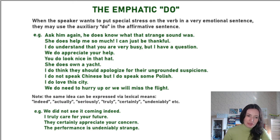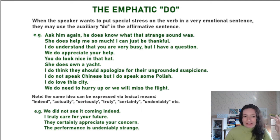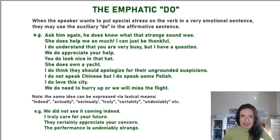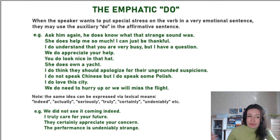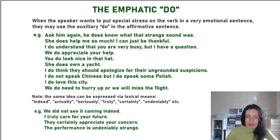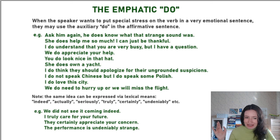Here you have plenty of examples to practice translating. The key is to translate with words like 'правда', 'действительно', 'на самом деле' — you are being emotional. You can choose lexical means instead: words like 'indeed', 'actually', 'seriously', 'truly', 'certainly', 'undeniably'. And if you have a negative sentence where you already have the auxiliary verb, you can't add another one — instead you'd say 'we really didn't expect this' or 'I truly care for your future.' So you can use either the emphatic 'do' or these lexical alternatives.